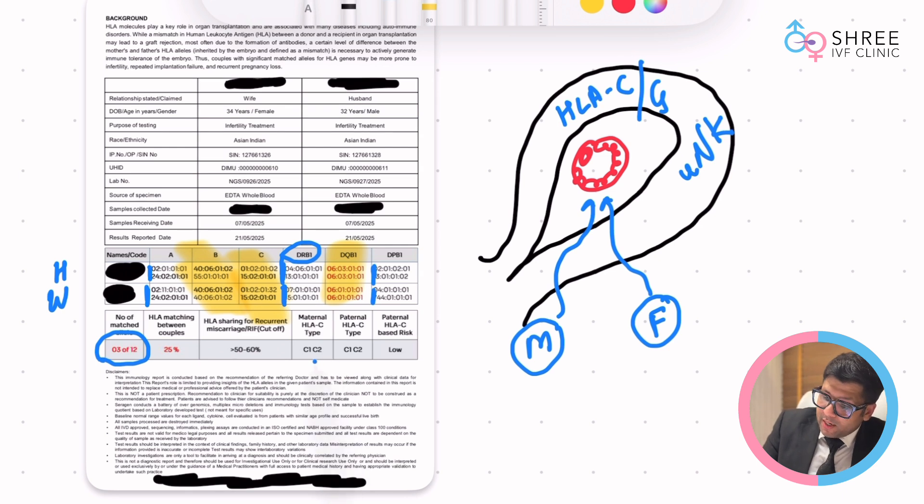If the paternal and maternal HLA C type is going to be C2 C2, that is something high risk. As a result of which, here we have a low risk report.